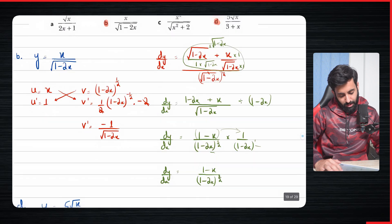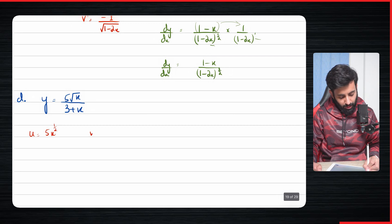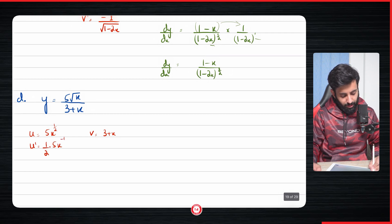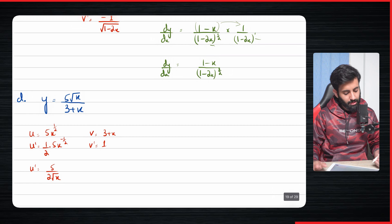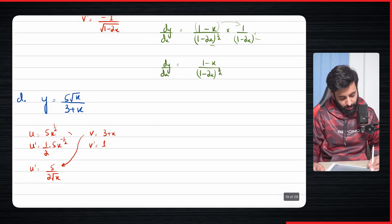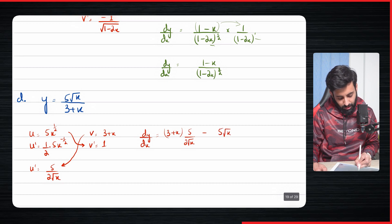Let's do one more example: part d, which is 5 root x over 3 plus x. So u equals 5x to the power half and v equals 3 plus x. Then u prime is half into 5x to the power minus half, which I'll write nicely as 5 over 2 root x. And v prime is just 1. Applying the quotient rule, dy by dx equals 3 plus x times 5 over 2 root x, minus 5 root x times 1, all over 3 plus x the whole thing squared.